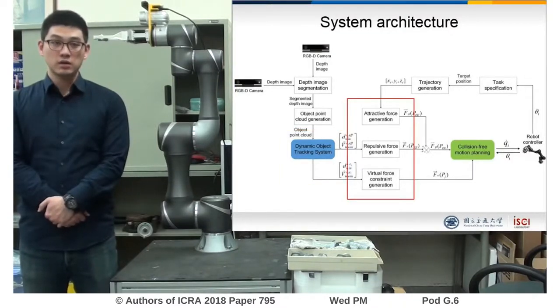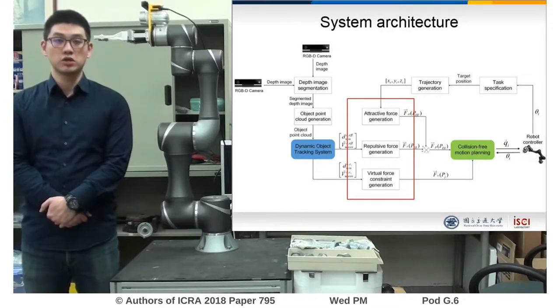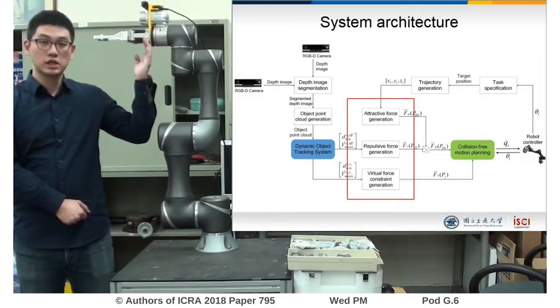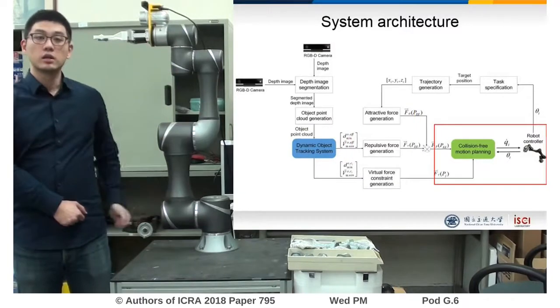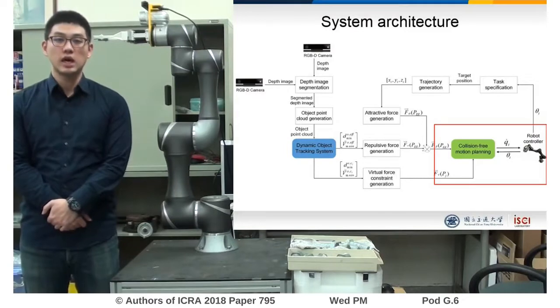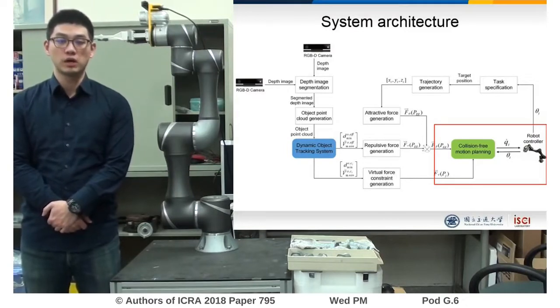For the collision avoidance behavior, attracted and repulsive potentials are generated for the robot end effector, and virtual force constraints are generated for the robot body. The motion planning method can integrate different collision avoidance behaviors and generate joint velocities for the robot to avoid obstacles.